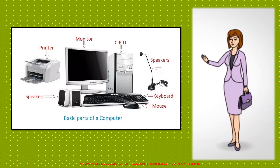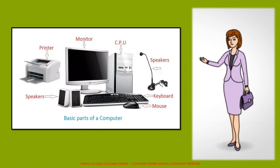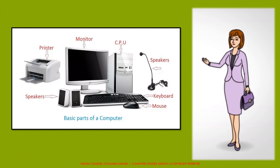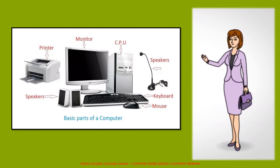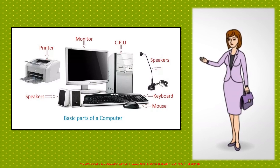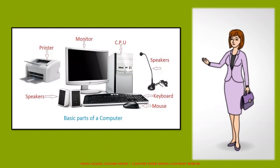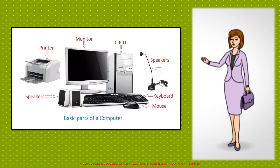What can y'all see in this picture? It is a computer. We all know that a computer has different parts. What are they? These are the basic parts of a computer: Monitor, CPU, Speakers, Keyboard, Mouse, and Printer.